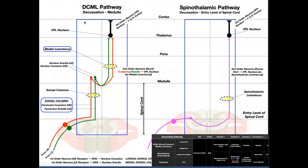This blue rectangle represents the nervous system. Down at the bottom are the lowest levels, such as the spinal cord, and at the top is the cortex of the brain. The center line is a midline, shown because all three of these pathways cross over to the other side, so we need to know where that crossing occurs. The horizontal lines represent different levels: the bottom dotted line is the entry level of the spinal cord, then there's the medulla, pons, thalamus, and cortex. This is the pattern used in all three videos.